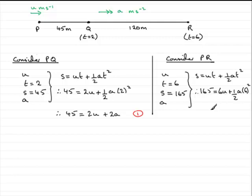Clean this up. What do we have? We therefore have 165 equals 6U. And then we've got 36 here for 6 squared. Half of 6 squared. That's going to be 18. So plus 18A. Now, we could divide through by 3 here. And if we do divide by 3, 165 divided by 3 is 55. And then we get 6U divided by 3 is 2U. And then 18A divided by 3 is going to be 6A. And that would be my second equation, number 2.